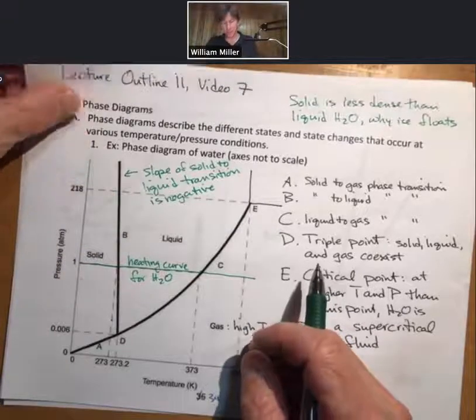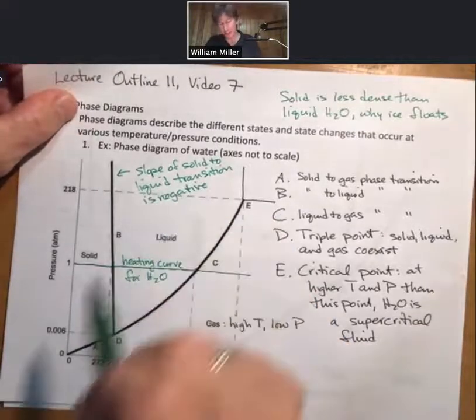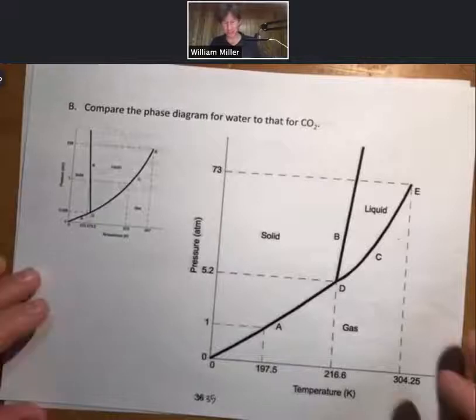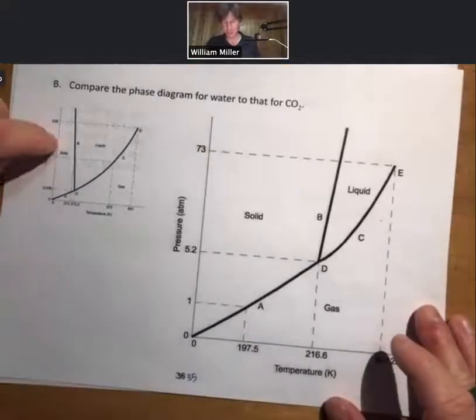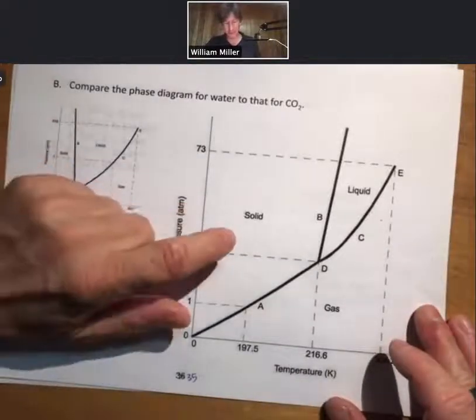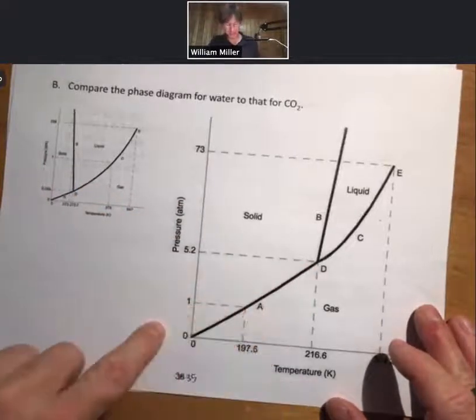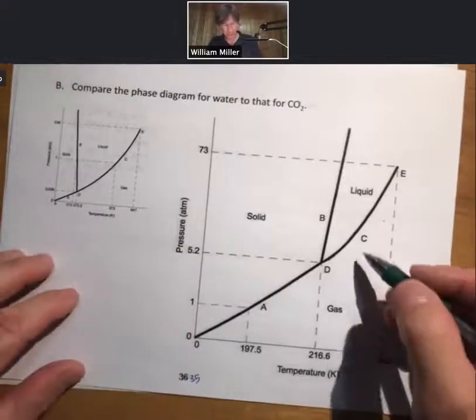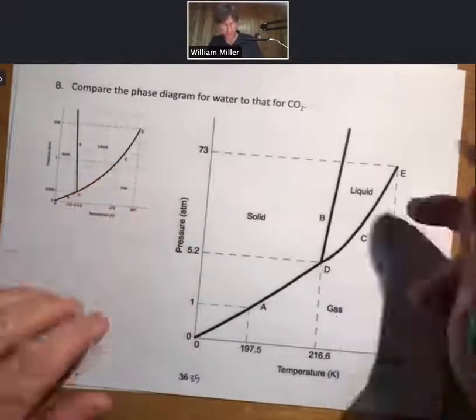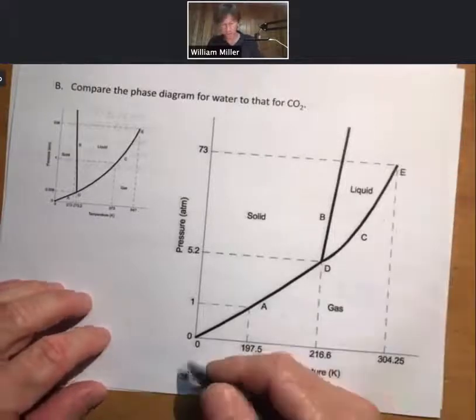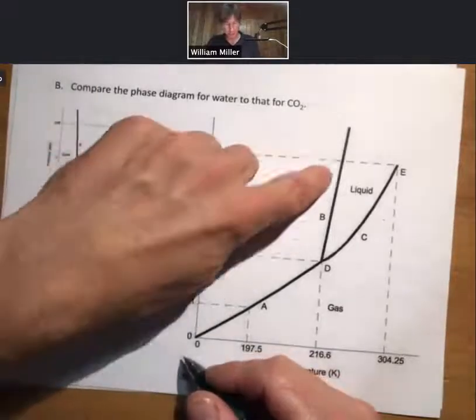So that's what's interesting about water. But almost every other substance, this line is positive. We'll show you an example of that right now. So here's water's phase diagram. Here's the phase diagram for carbon dioxide. Same kind of line here, same liquid-gas line, although we don't extend it quite as far to get to the triple point. Slope of this line is positive.